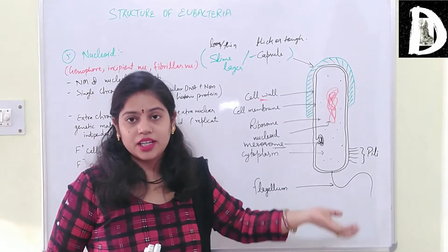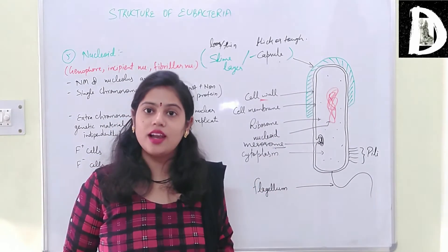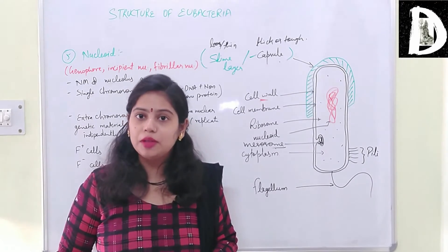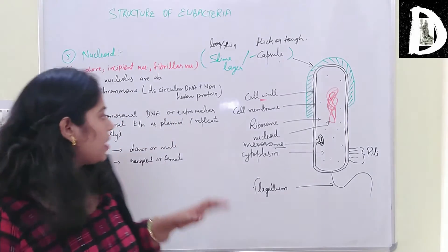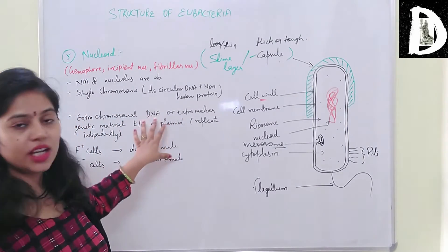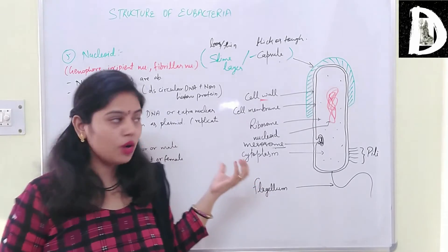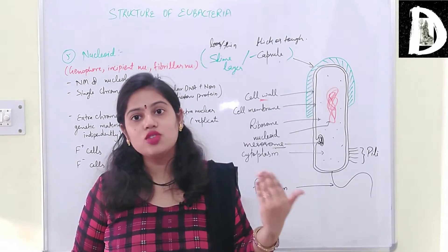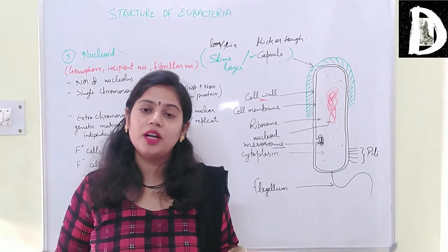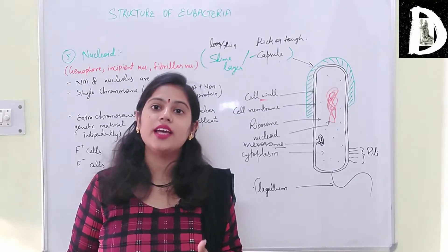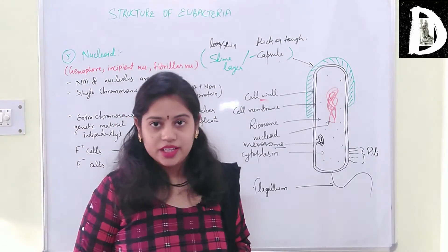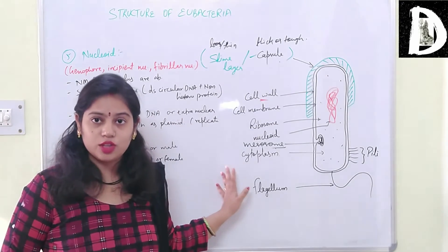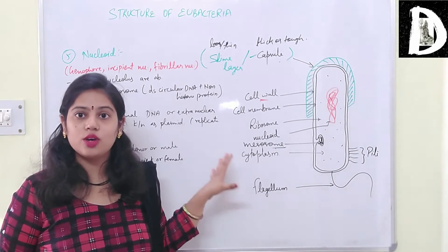In addition to the main genetic DNA, bacteria can have extra chromosomal DNA present in the cytoplasm, which is called a plasmid. The plasmid is extra chromosomal DNA present in the bacterial cell, and it has the capacity to replicate itself independently. However, plasmids are not present in all bacteria.